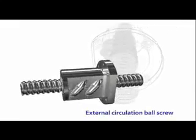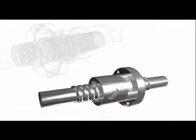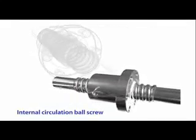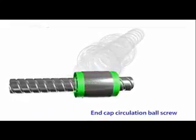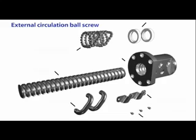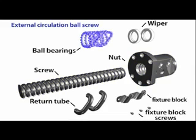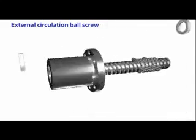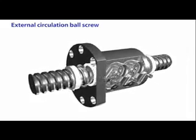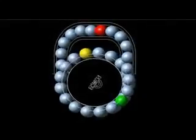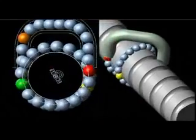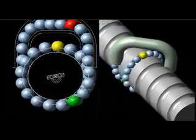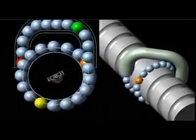External circulation ball screws consist of a screw, nuts, ball bearings, return tube, fixture block, and wipers. The bearings are located between the screw and the nut, and circulation is achieved using the return tube. As a result, the bearings return by way of the nut. Since the return tubes are located outside of the nut, this is known as an external circulation ball screw.